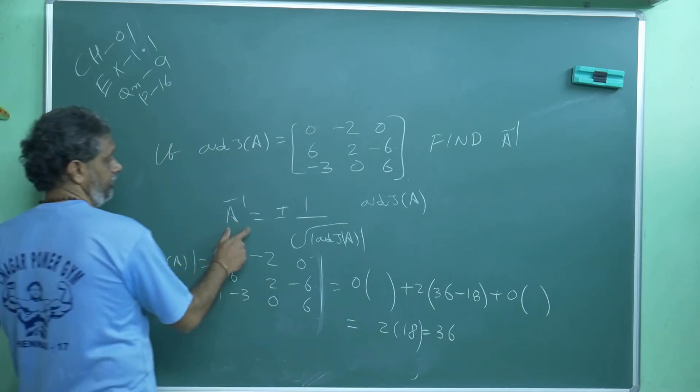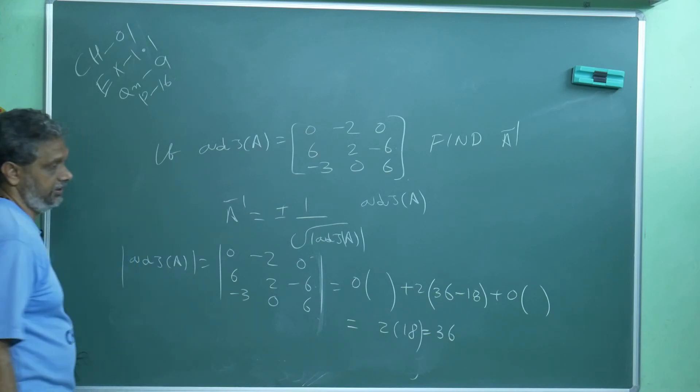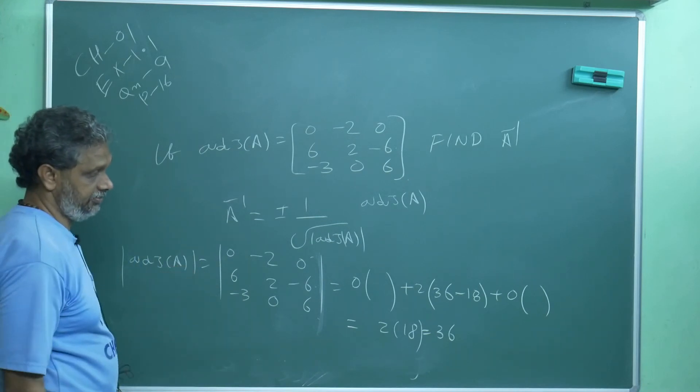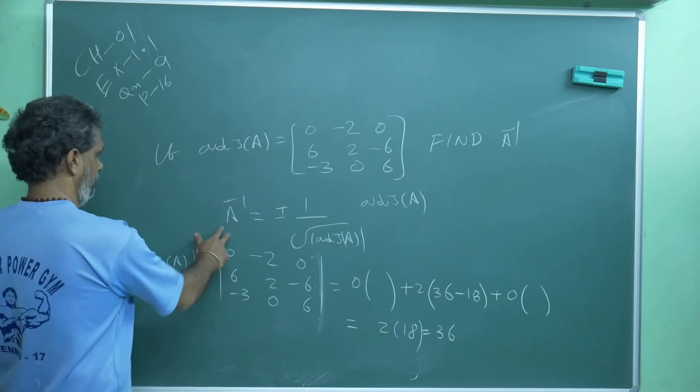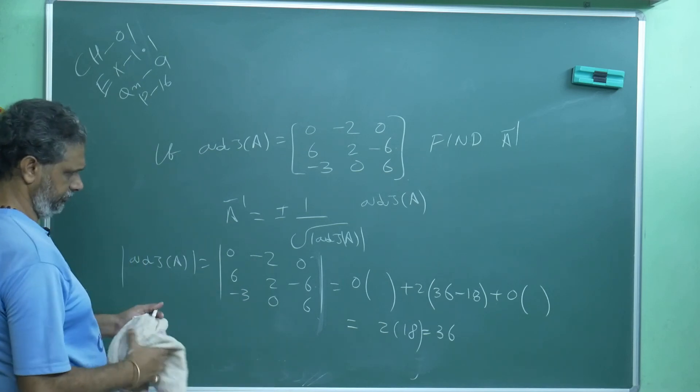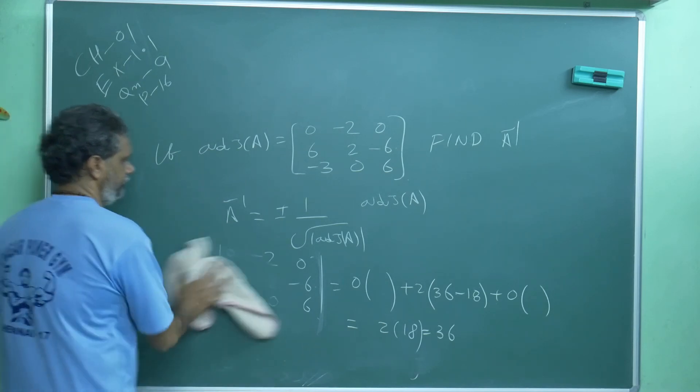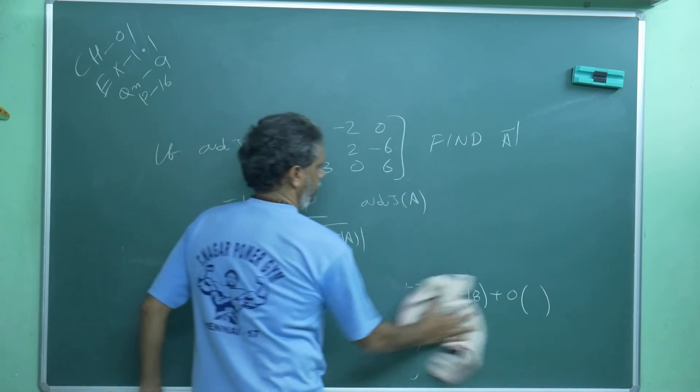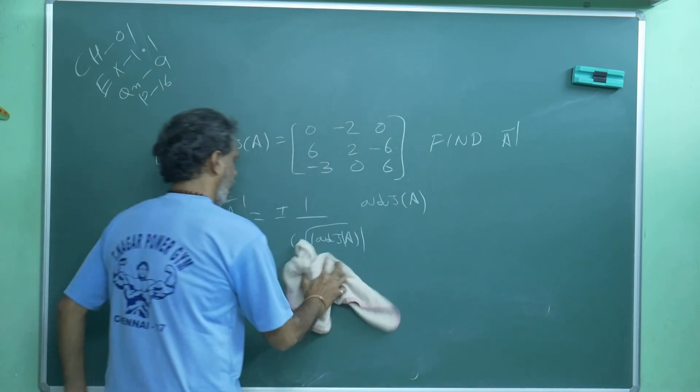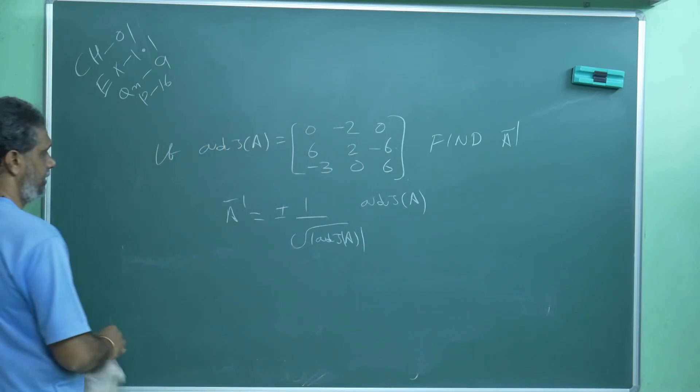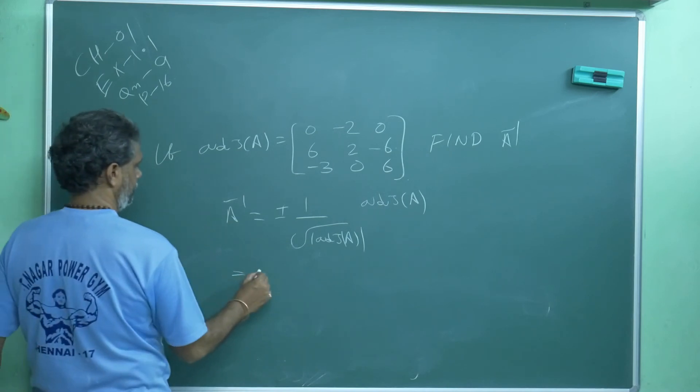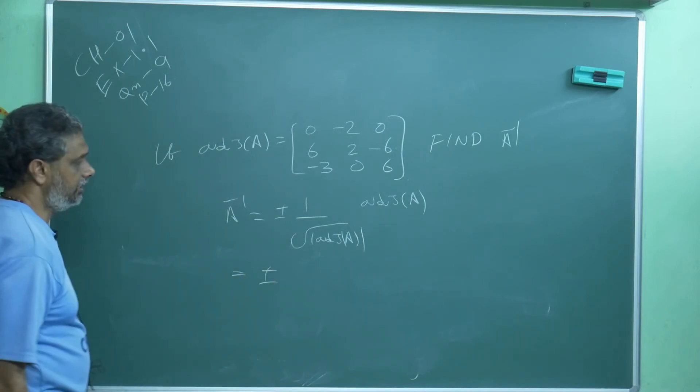Remember this formula is very important. Remaining all are like LKG problems you can do, but if you remember the formula, there's nothing in there. And A inverse is equal to this, then this is equal to the determinant I got.